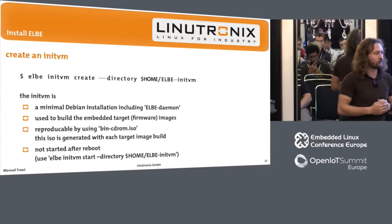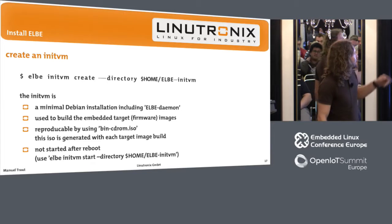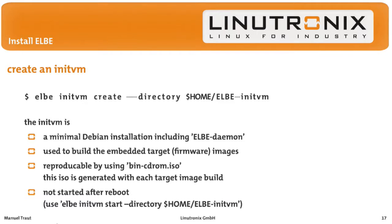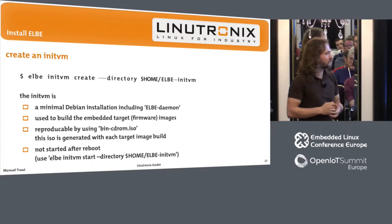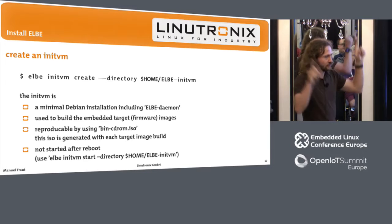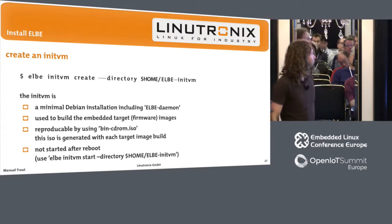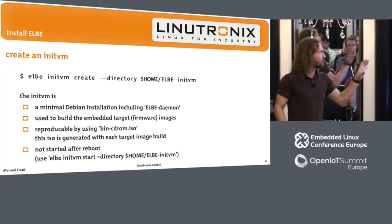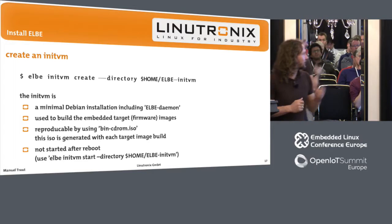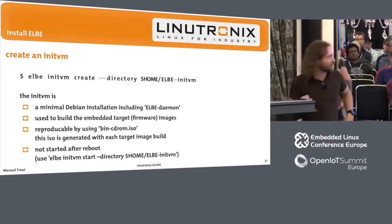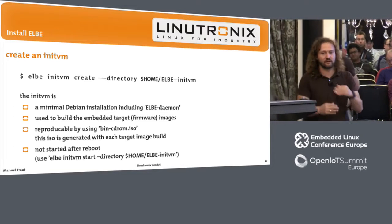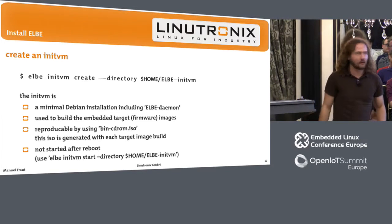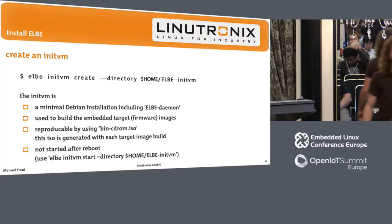The first thing you need to do is create the initial virtual machine. This is done with the command 'elbe initvm create', and you can give a directory where the initvm is stored. The initvm is a basic Debian installation — Jessie at the moment — including the Elbe daemon package. It is used to build firmware images inside the initvm, and as mentioned, it's reproducible from the binary CD-ROM output. The initvm is not started automatically when you boot your host PC, so you always need to start it explicitly.